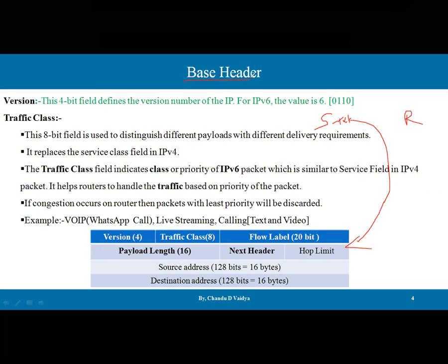Let's start with the base header. The very first field is the Version field, which is 4 bits in length, defining the version of the IP datagram. For IPv6, the value is 6 — represented as 0110 in binary. Whenever a computer sees 0110 in the packet, it identifies this as an IPv6 datagram. If the value were 0100 (which is 4), the node identifies it as an IPv4 datagram.